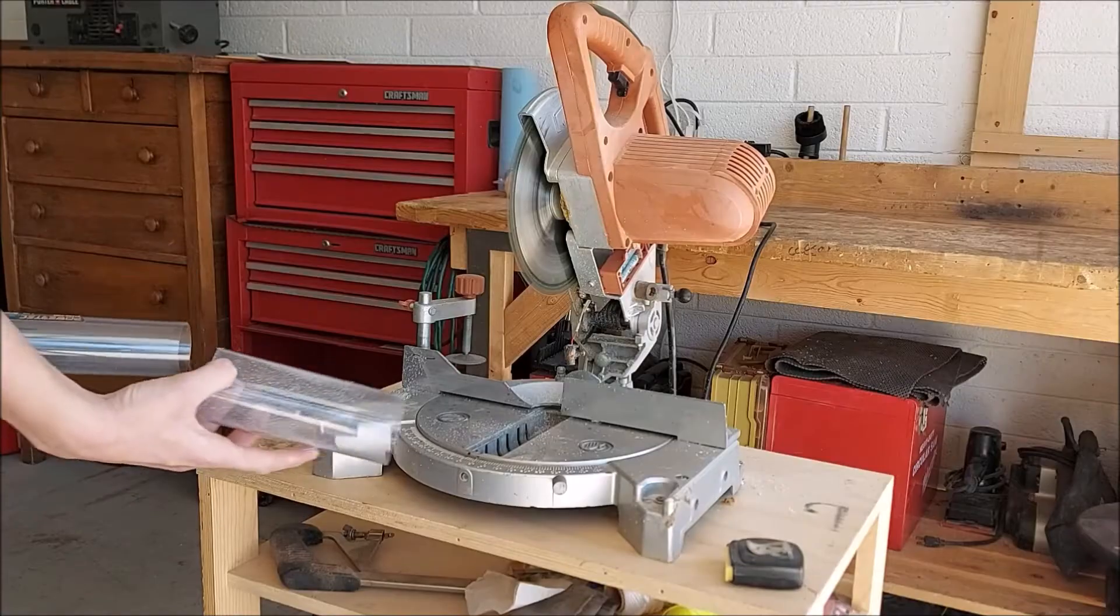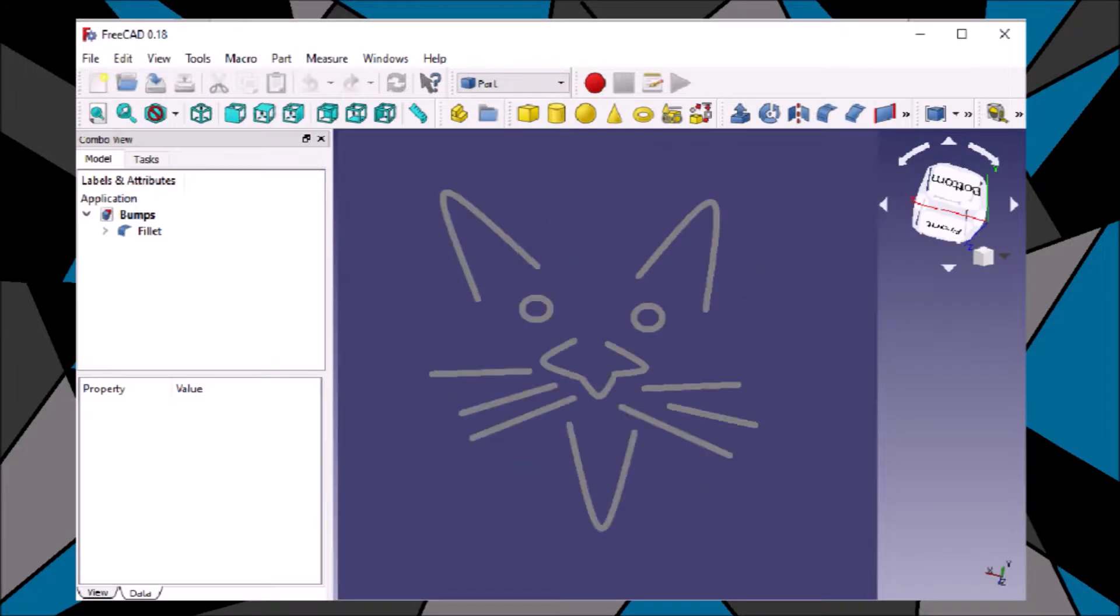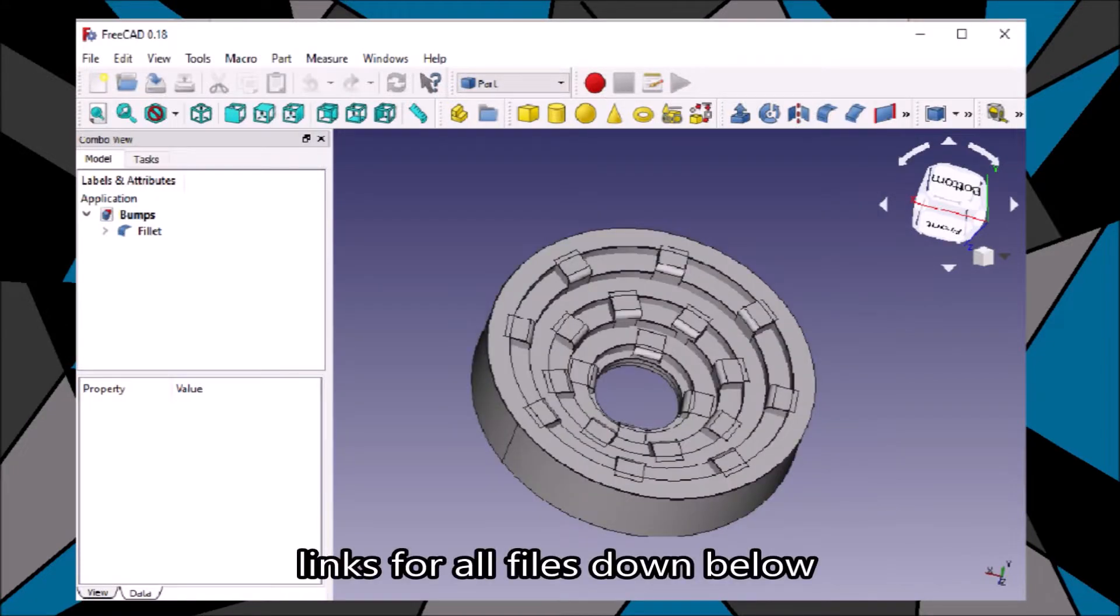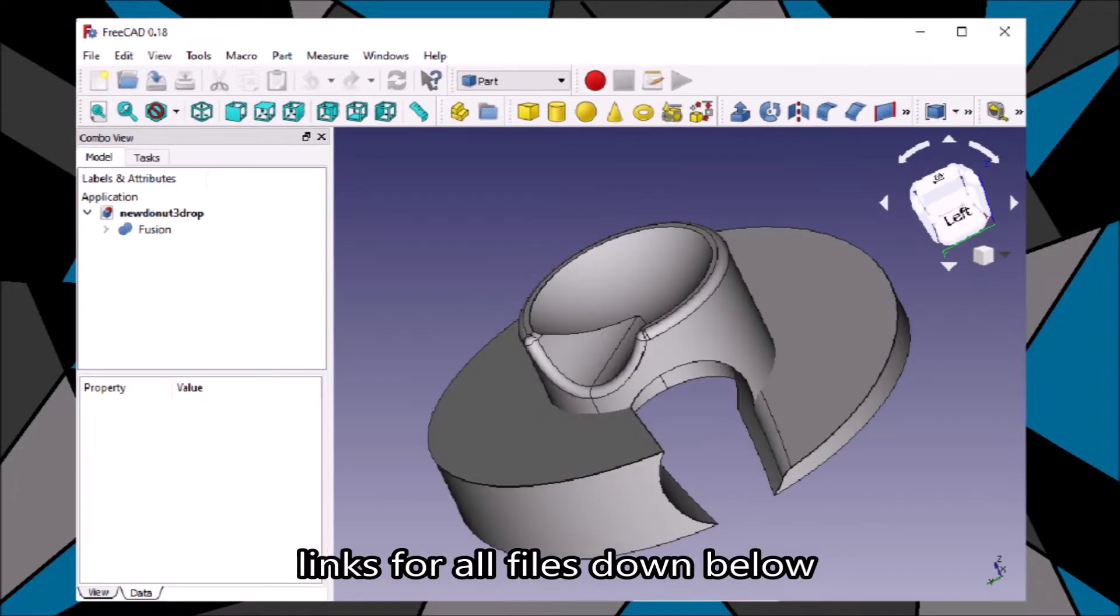And so with our marble and main housing out of the way, it's time to switch our attention to building the internals or the main track itself. After several hours of playing around with different designs and concepts, I ended up making four different track pieces plus the top of the can and the bottom door of the can.